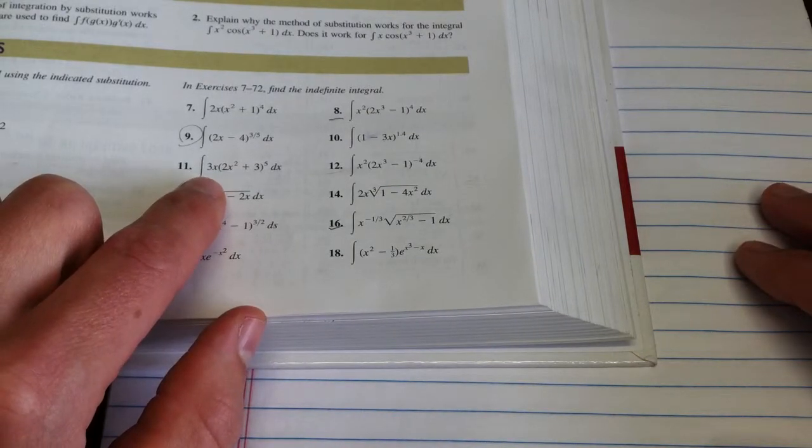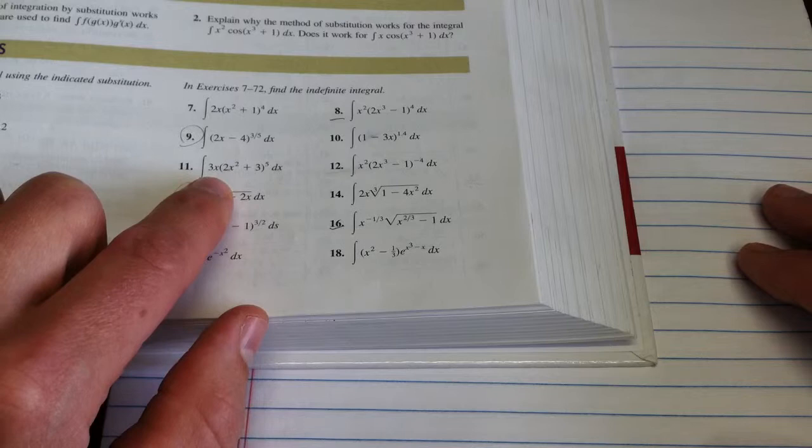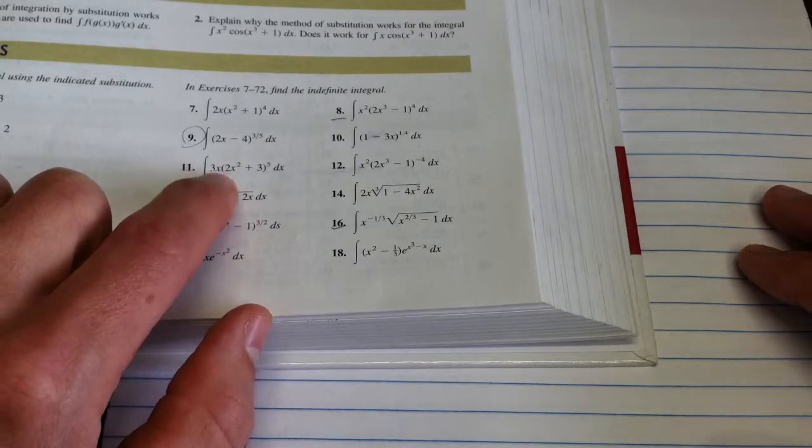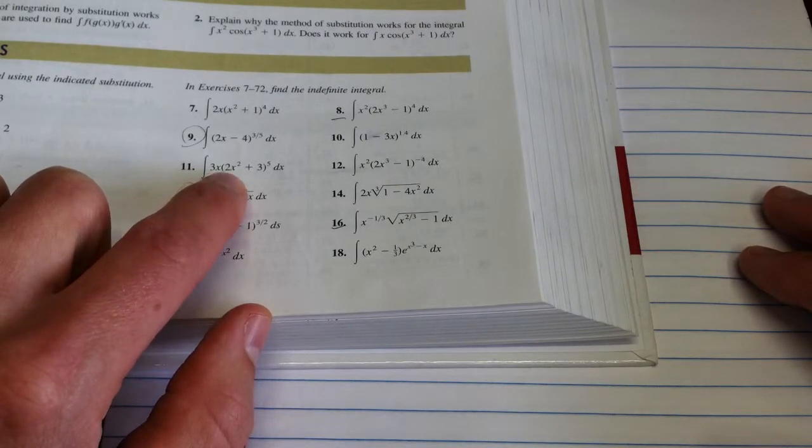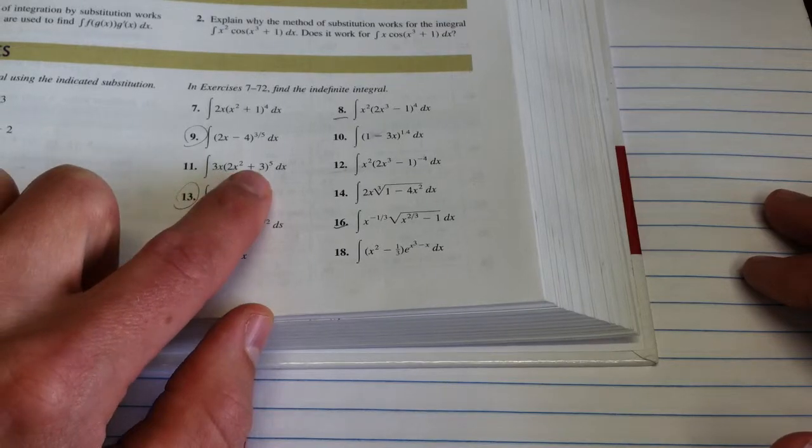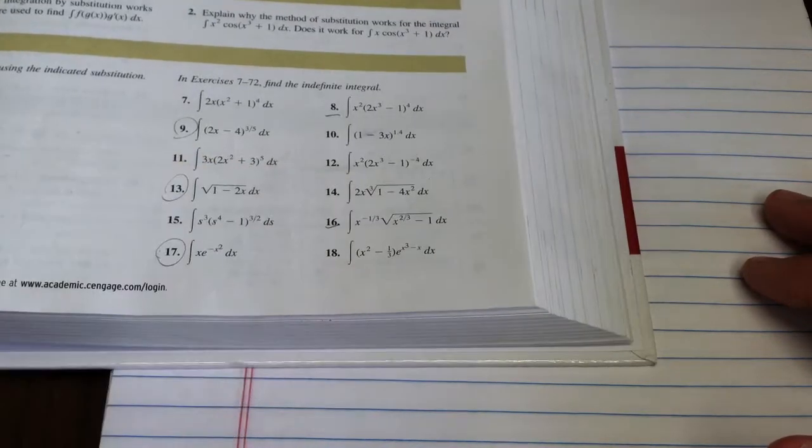It says, find the indefinite integral of 3x times the quantity 2x squared plus 3 to the 5th dx. Let's take a whack at that one.